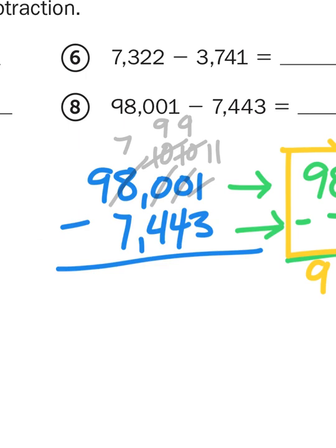So my new number is now 97,990 with 11. So when I do my calculations, I just subtract.